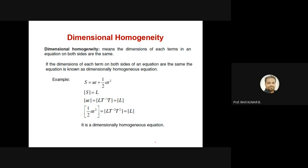For example, take S = ut + ½at². Distance S is measured in meters, so dimension is L. For ut, velocity times time gives (m/s)×s, which cancels to give L. For ½at², acceleration times time squared gives L. So left side is L and right side is also L — the powers of fundamental dimensions are the same on both sides. We can say this is a dimensionally homogeneous equation. For any formula, you can verify dimensional homogeneity by equating dimensions on each side.